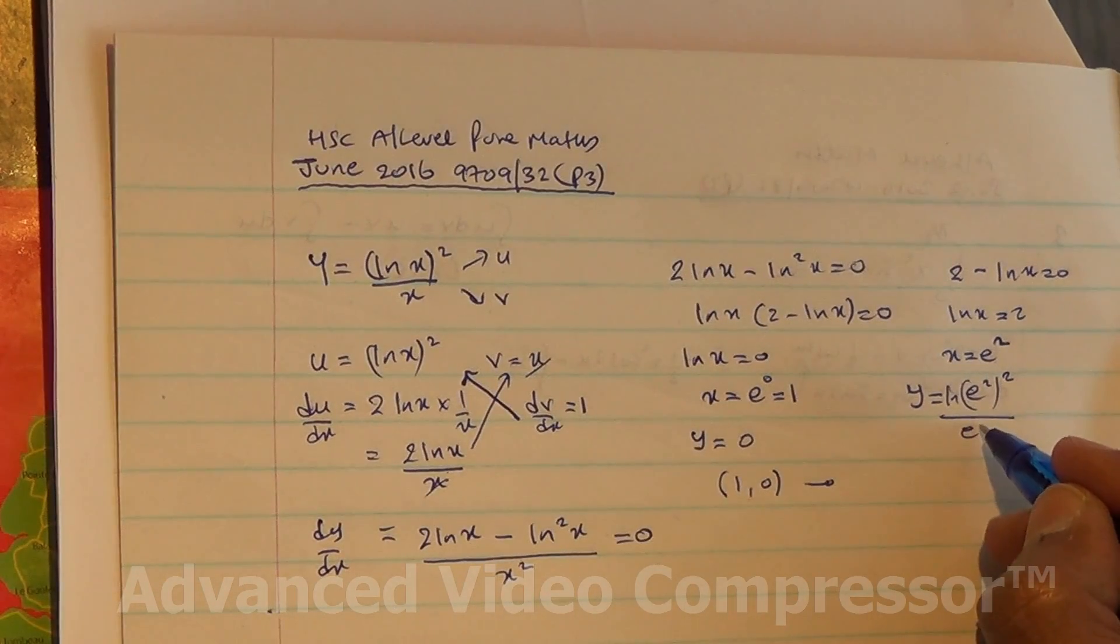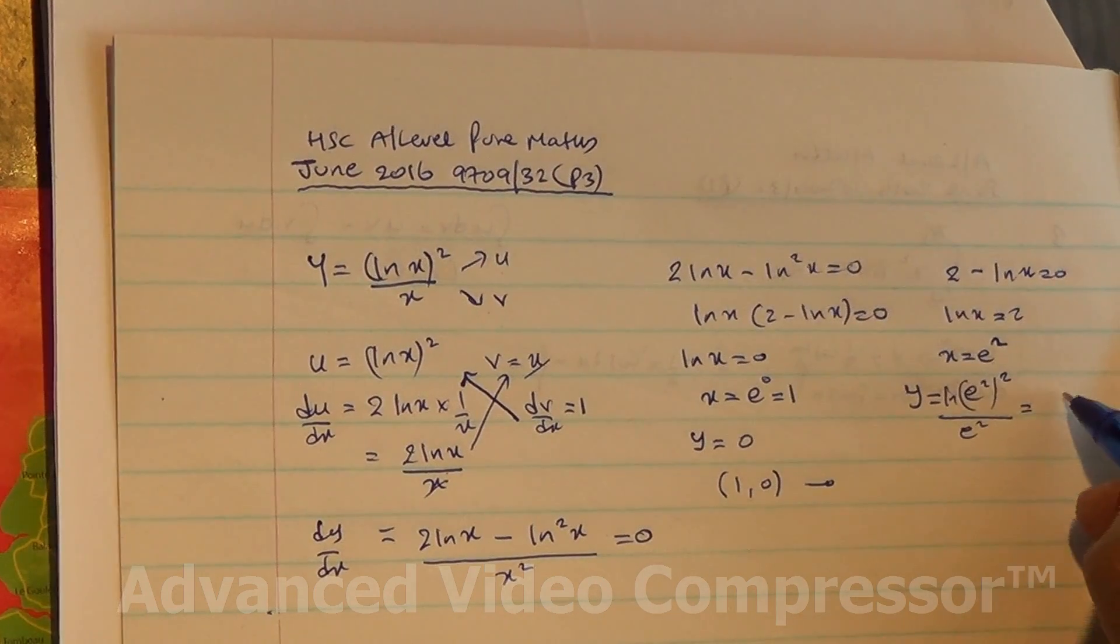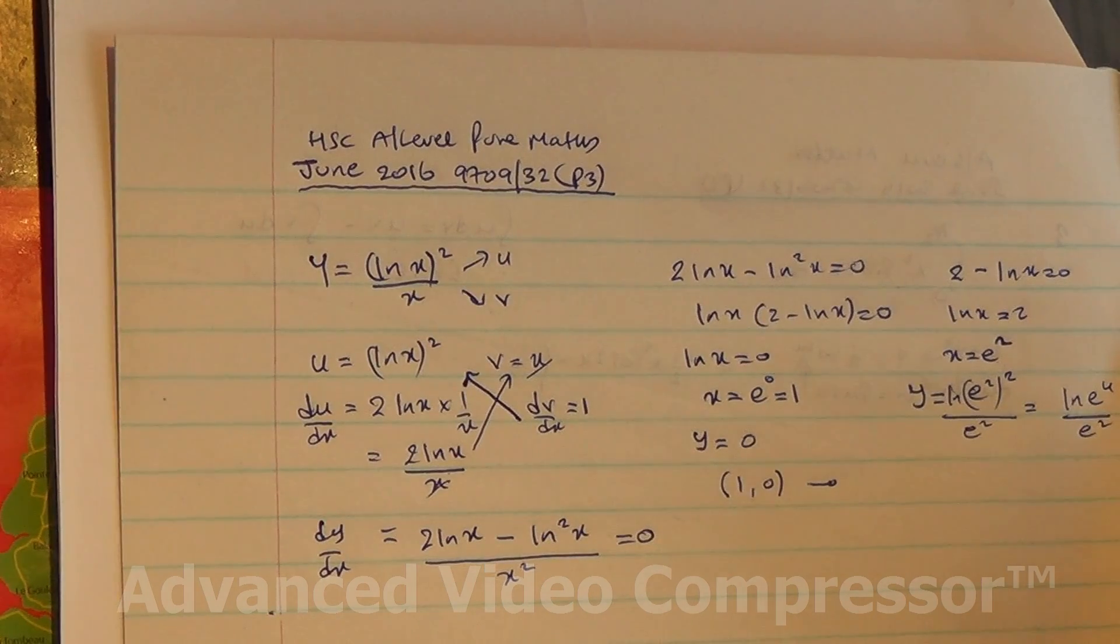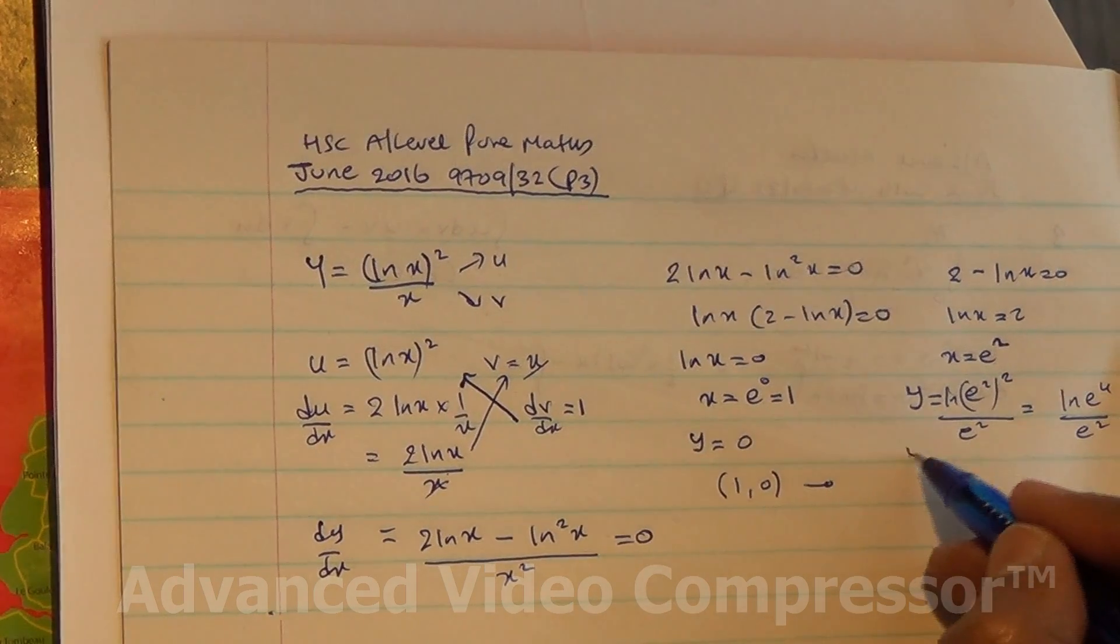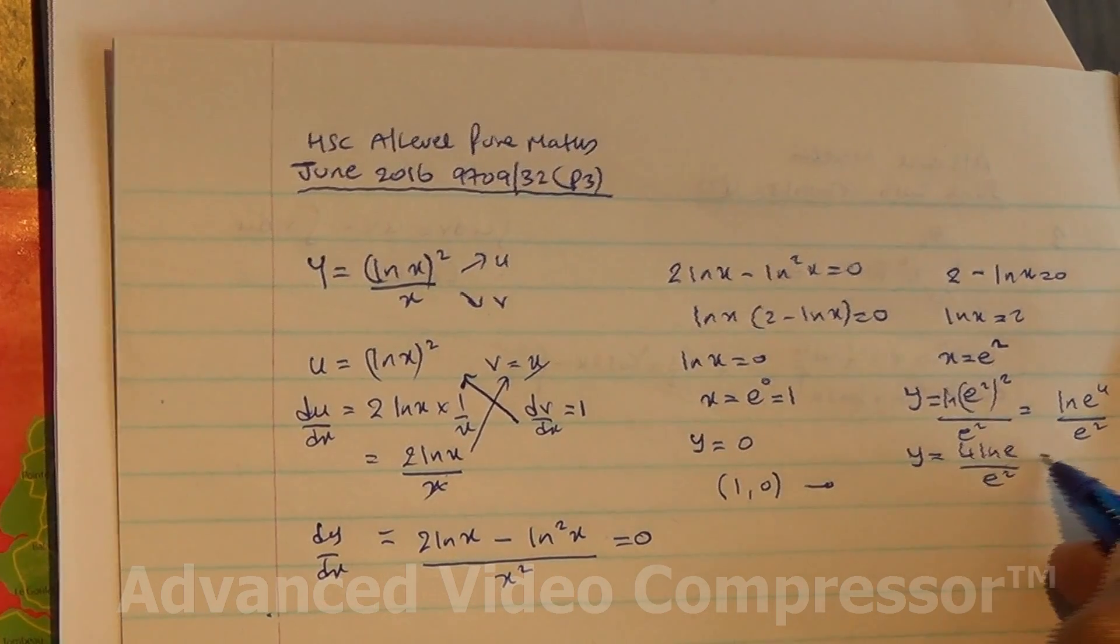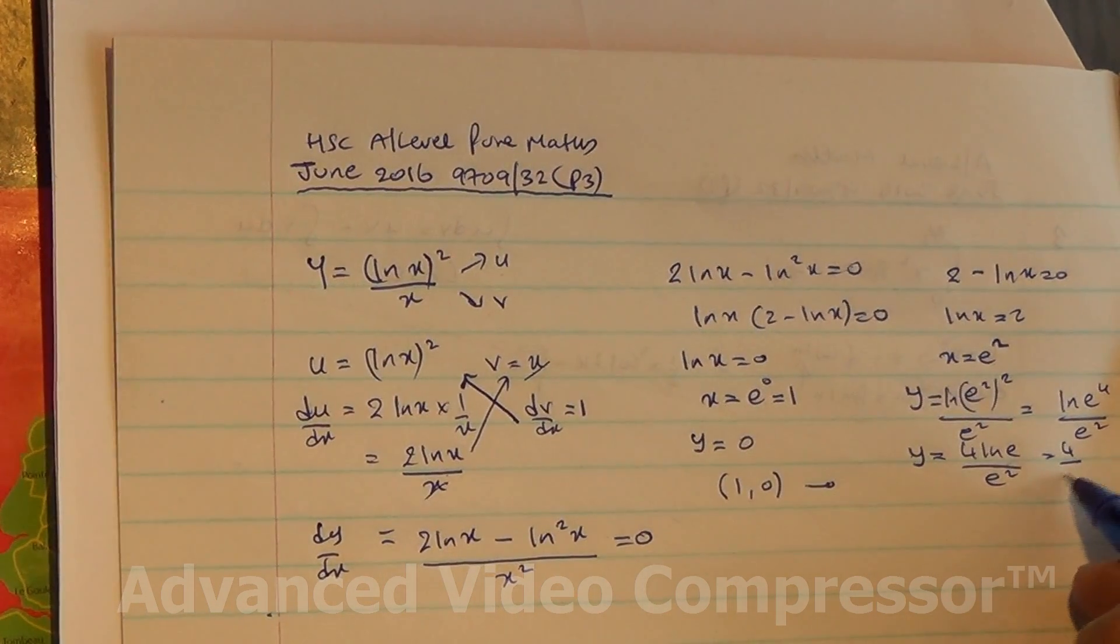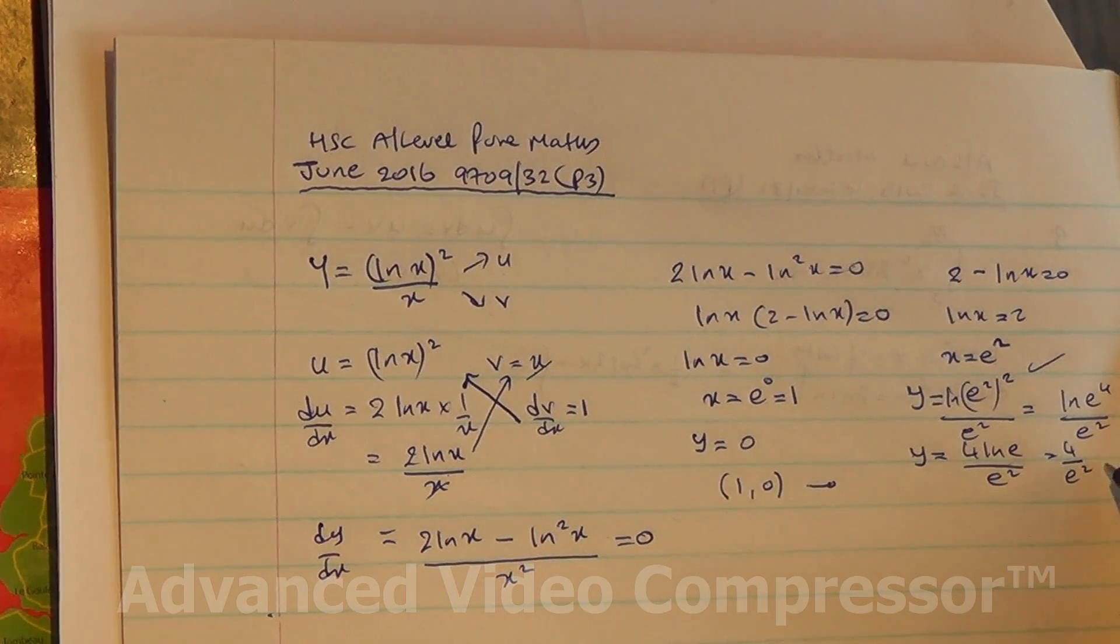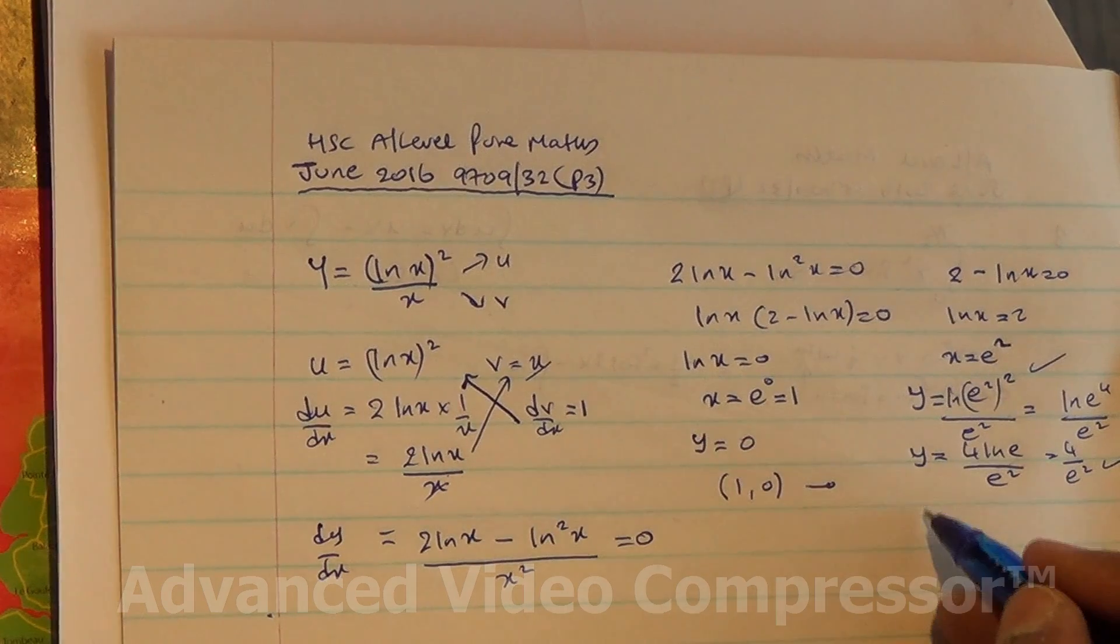That simplifies to 4 ln e over e². Since ln e equals 1, we get 4 over e². So x equals e² and y equals 4/e².